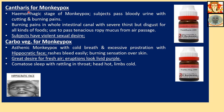Cannabis for monkeypox: indicated in the hemorrhagic stage of monkeypox. Subject passes bloody urine with cutting and burning pains. Burning pain in the whole intestinal canal with severe thirst but disgust for all kinds of food. Used to pass tenacious ropy mucus from the air passage. Subject has violent sexual desire — this is one of the very peculiar symptoms — with this disease, monkeypox, the sexual desire is increased.